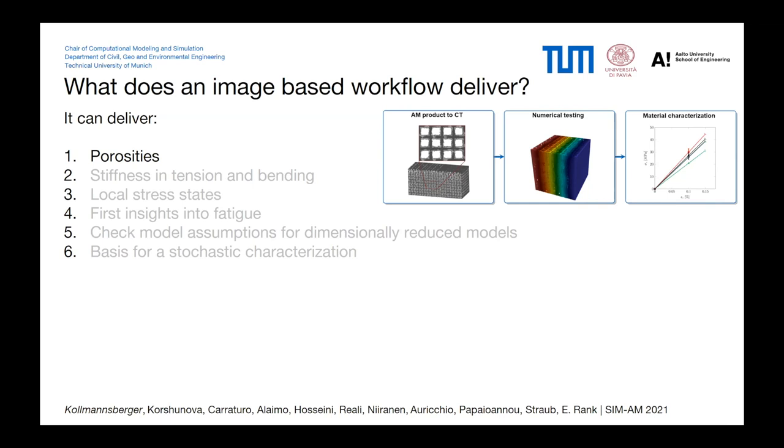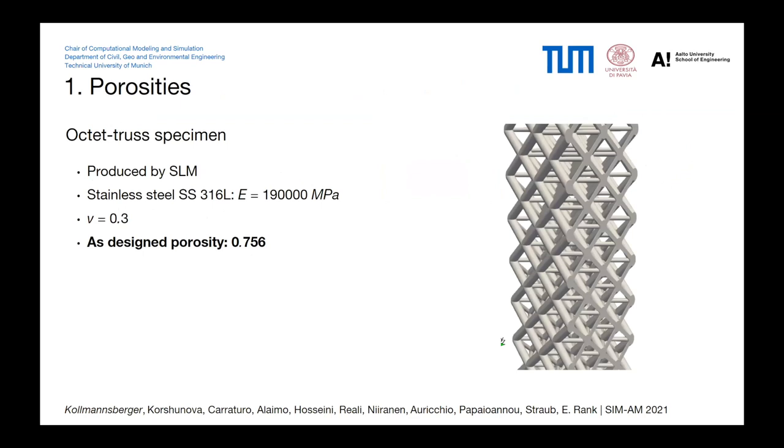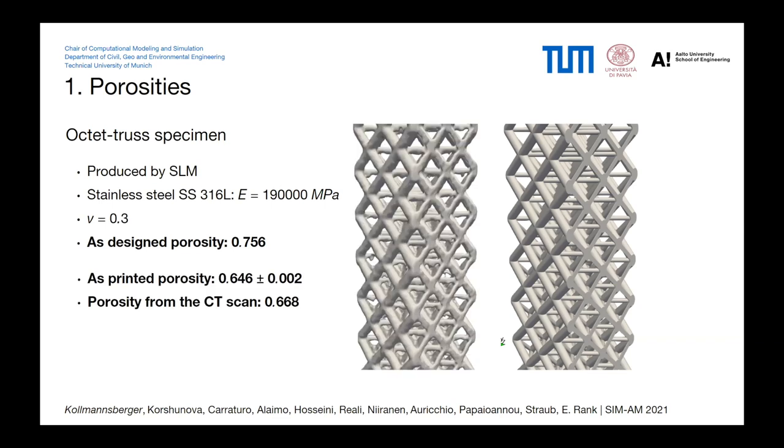Porosities are easy to measure. This is an as-designed structure, given a porosity of 0.75 roughly. And then when you print it, then you find there is a different porosity that you come up with. The porosity here is slightly lower. There's two ways to measure this. Either you do it with a CT scan or you submerge the structure in a liquid. They agree fairly closely, but are far away from the as-designed porosity.